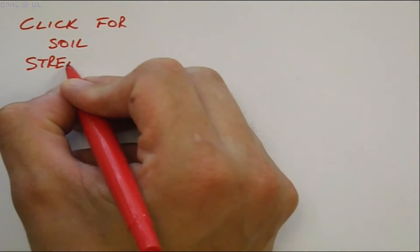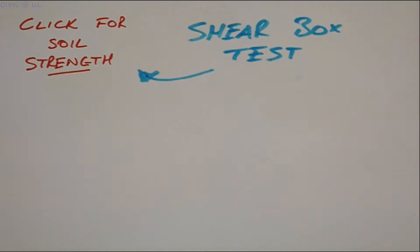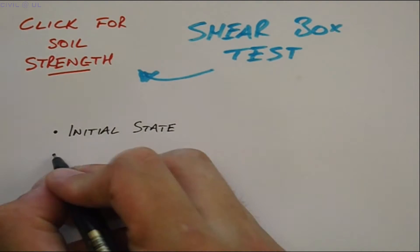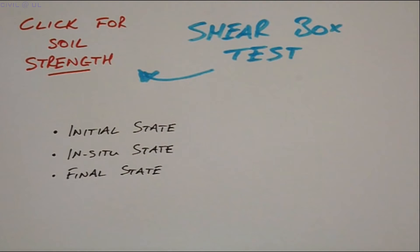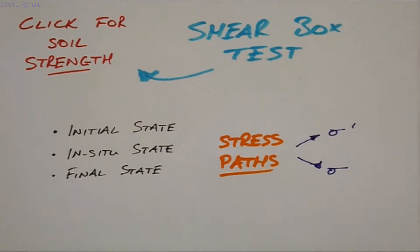In our last video we introduced the shear box test as a means of measuring soil strength. We will now use the shear box test to demonstrate that the behaviour of soil depends not only on the initial in situ and final states, but also on the route taken between these states. These routes are referred to as stress paths and may be plotted as either effective stresses or total stresses.